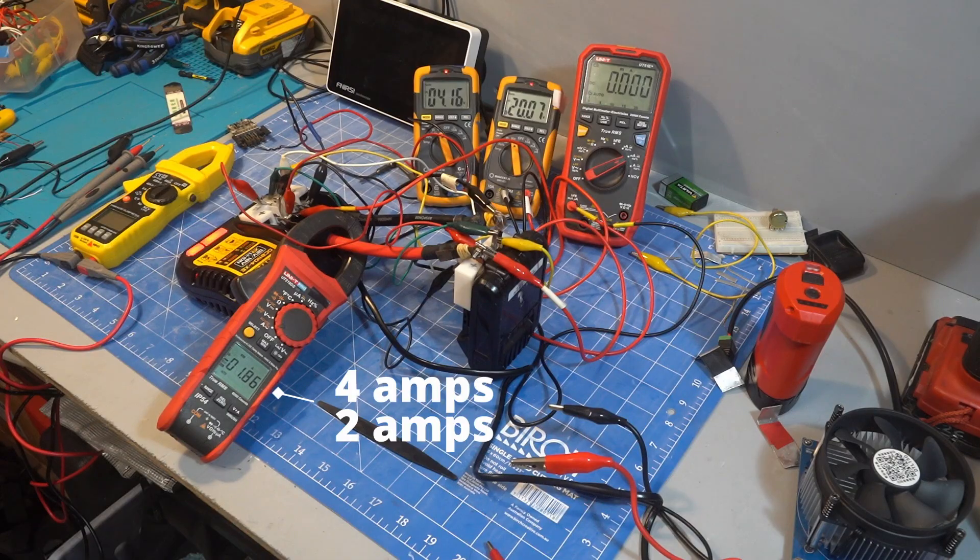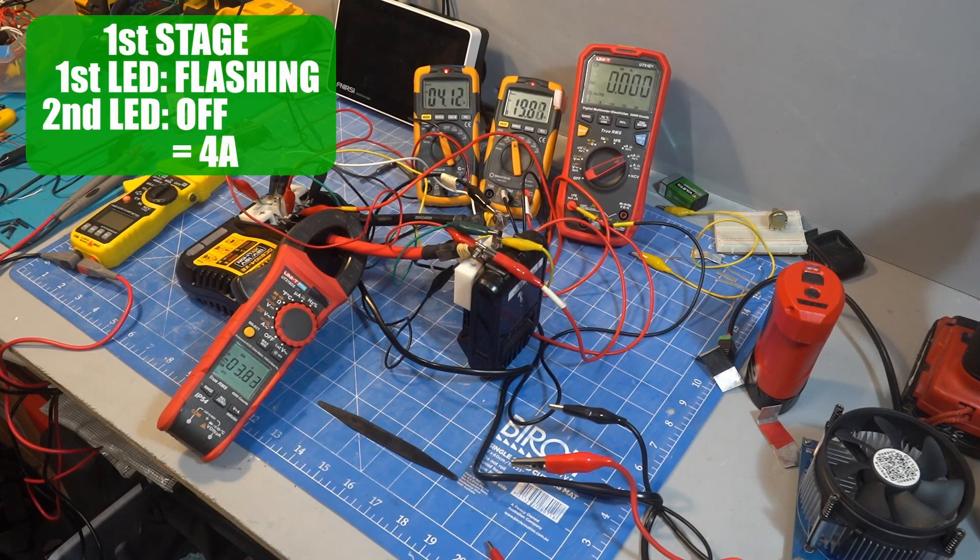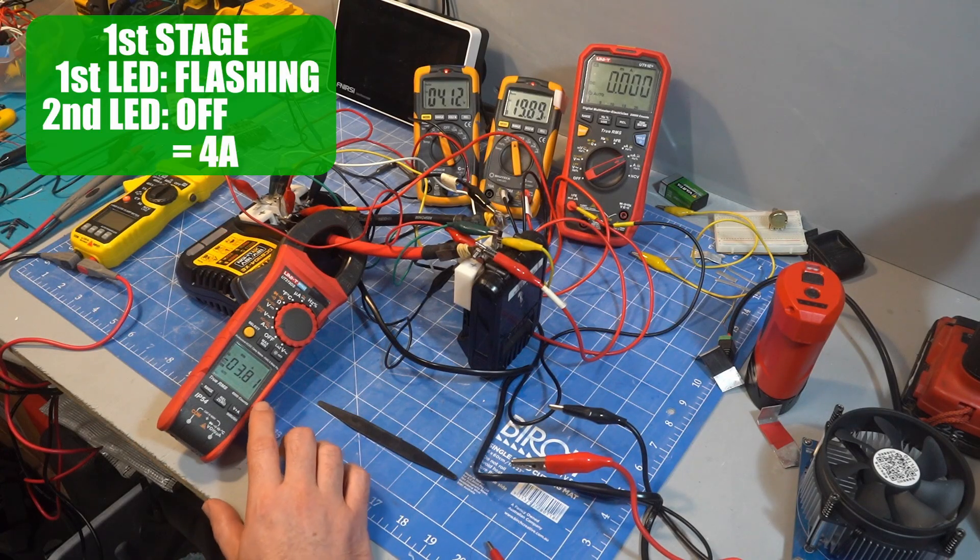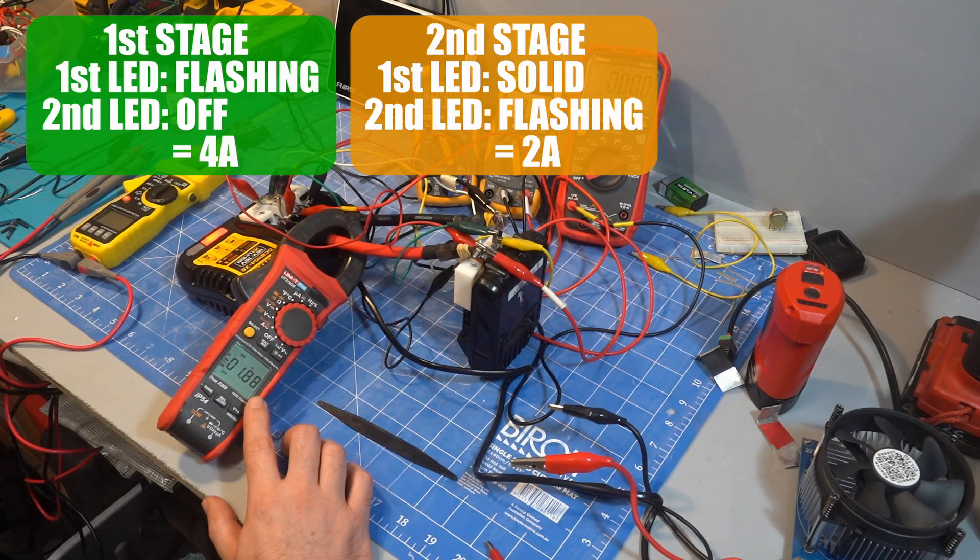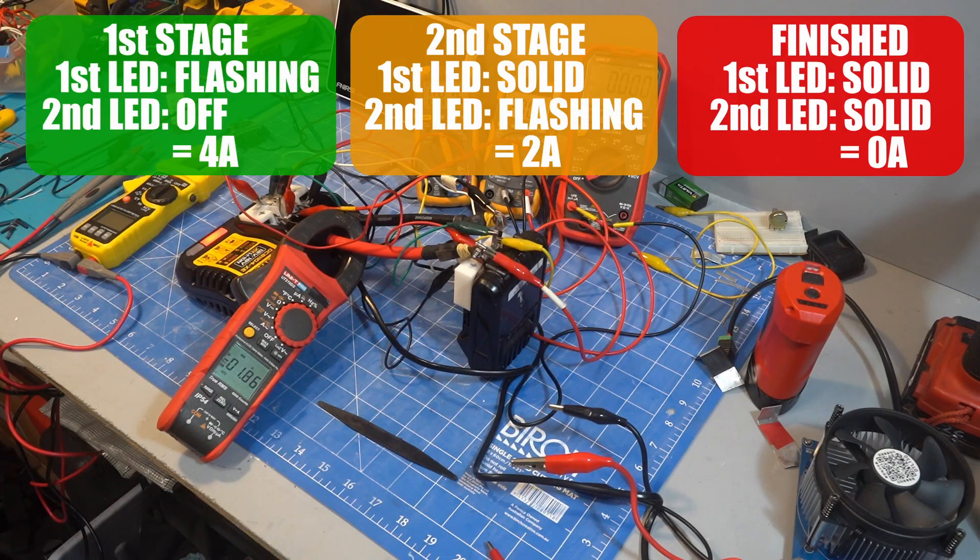There was no constant voltage phase where the current steadily decreased. So unless we're getting very different chargers outside of North America I don't think the 2 stage chargers do constant current constant voltage. It's still doing the same full current, half current charging like the older chargers with the only change being that the LEDs show you when it changes to the half current top up.